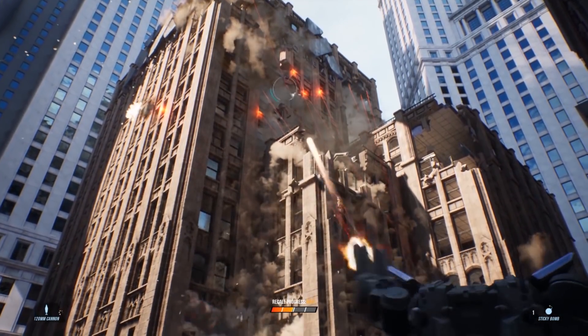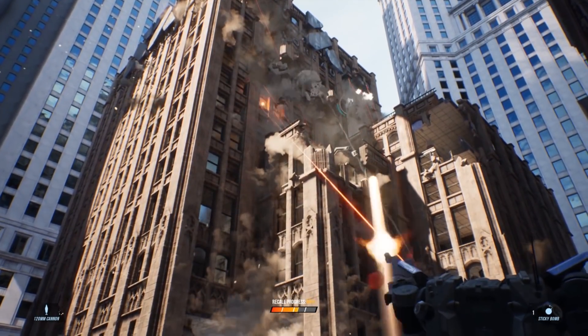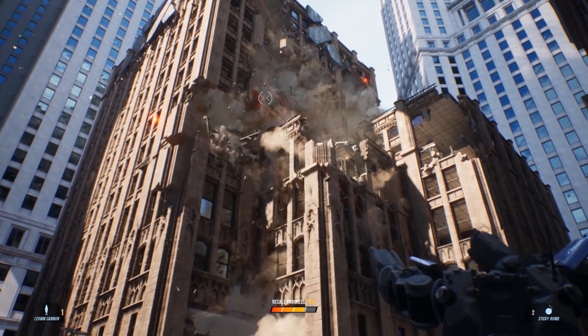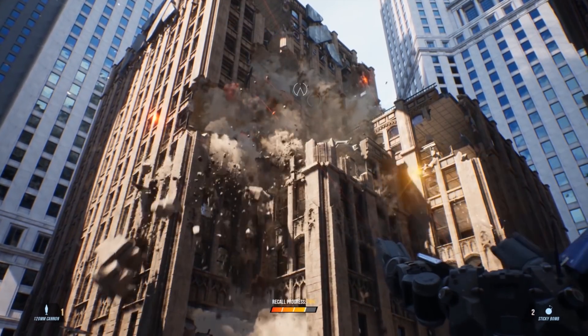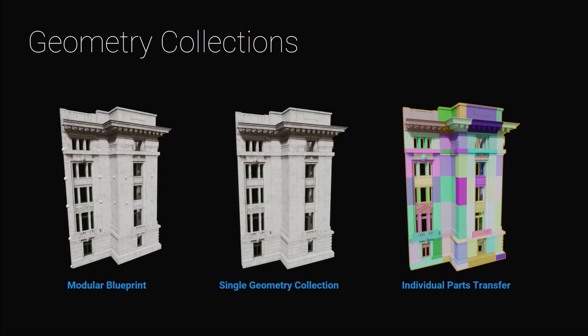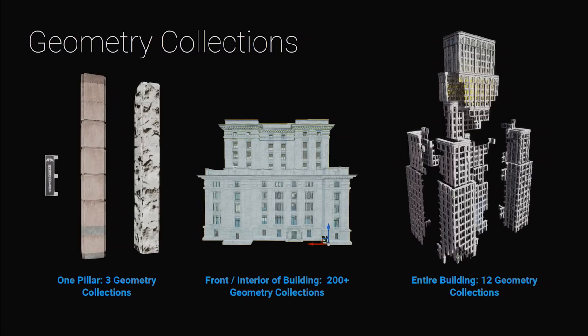Before we dive into a demonstration, let's explore the technology behind Chaos. Destruction within the Chaos system starts with a new kind of asset called a geometry collection. This is where the destructible piece, or pieces, are defined.